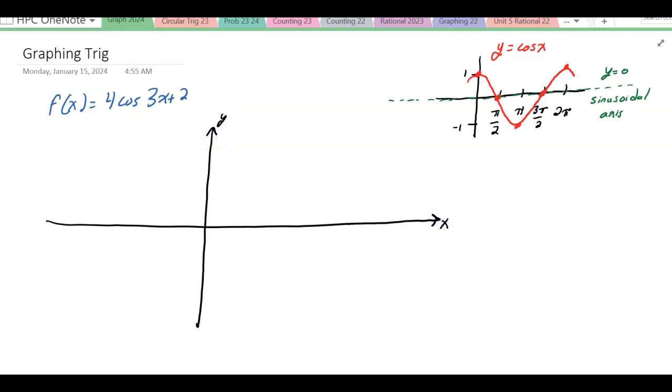Looking at this graph, we know that the sinusoidal axis is at y equals 2. I just highlighted that in green. So the sinusoidal is at y equals 2. That is the vertical shift, so I'm going to first draw that in.